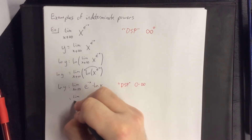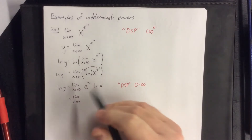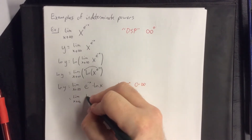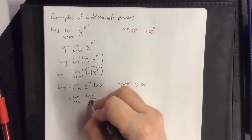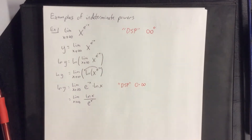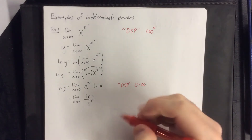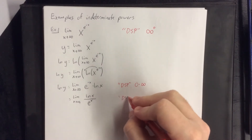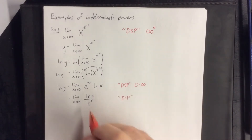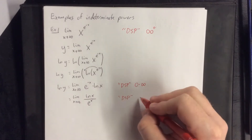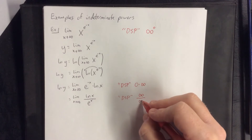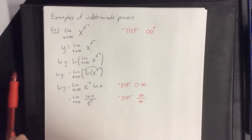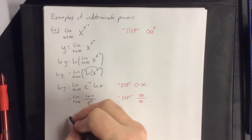For the indeterminate product, we force a fraction. We move e to the negative x into the denominator — because the exponent was negative, it simply becomes e to the positive x in the denominator. Attempting direct substitution: the natural log of x goes to infinity and e to the x goes to infinity as x goes to infinity. We now have an infinity over infinity form, so we are good to use L'Hôpital's rule.